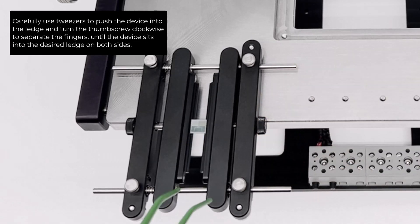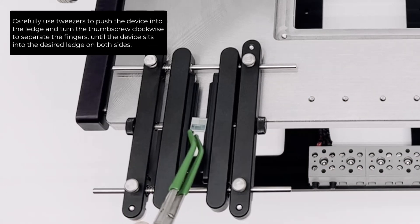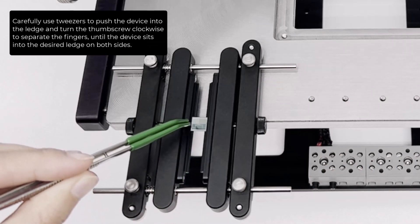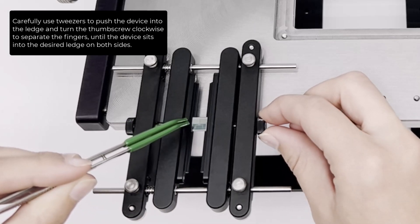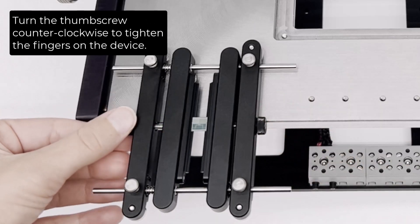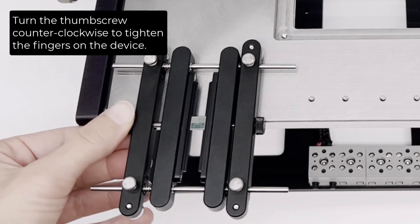Turn the thumb screw counterclockwise to tighten the fingers on the ledge. Carefully use tweezers to push the device into the ledge and turn the thumb screw clockwise until the device sits into the desired ledge on both sides. Turn the thumb screw counterclockwise to tighten the fingers on the device.